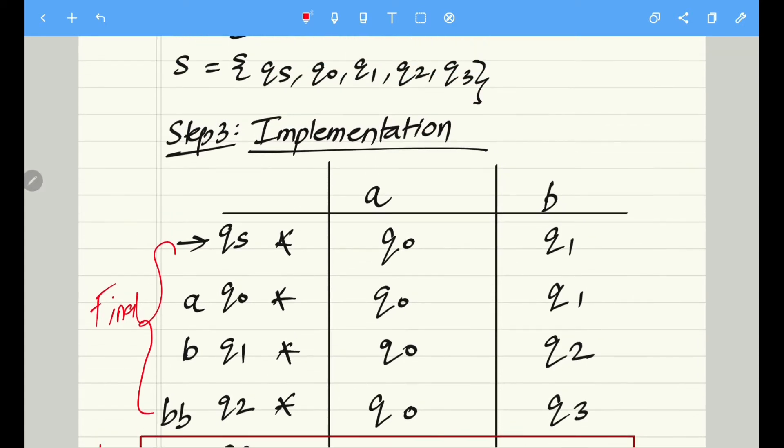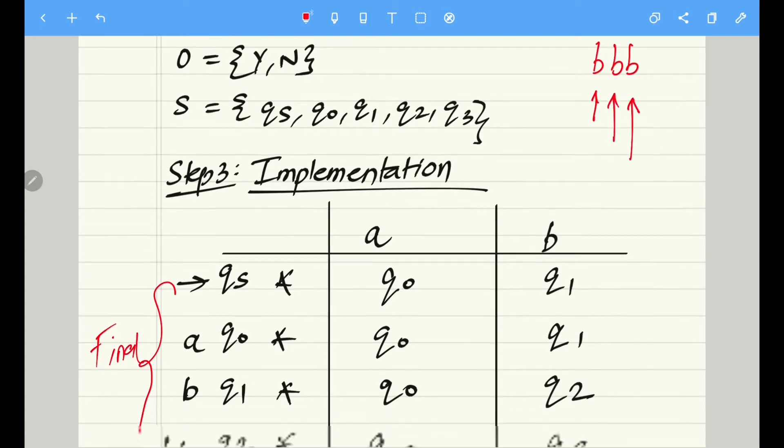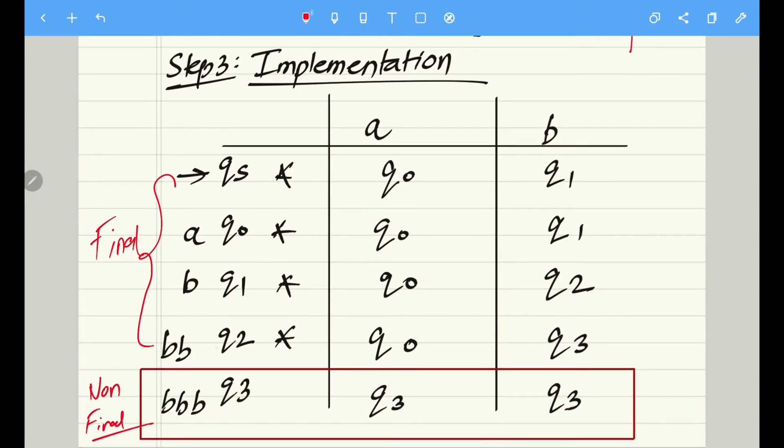q2 is a state which is having two consecutive b's, because as we have already discussed, if we want to check three consecutive b's, we first of all have to accept this single b, then two b's, and then three b's. We can't go directly with three b's, and hence we have to add an intermediate step or intermediate state q2 which will accept two consecutive b's.